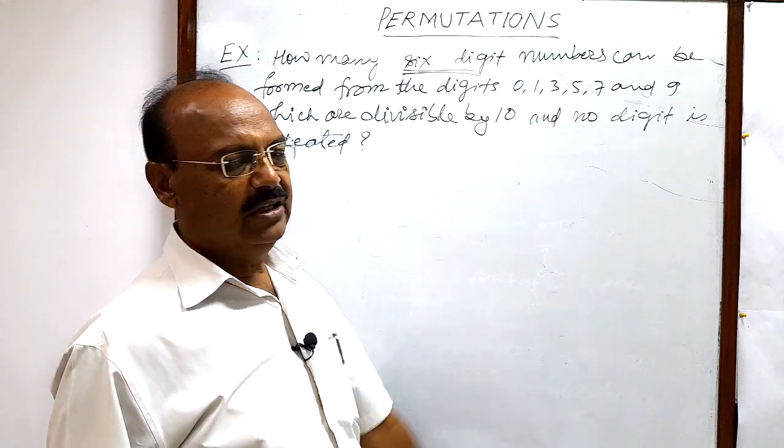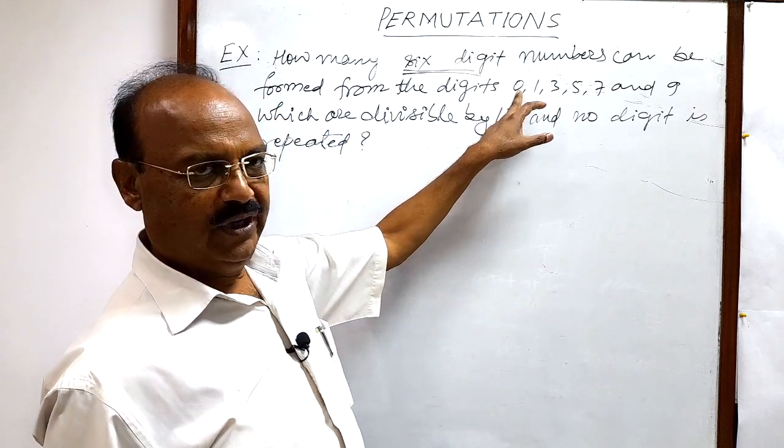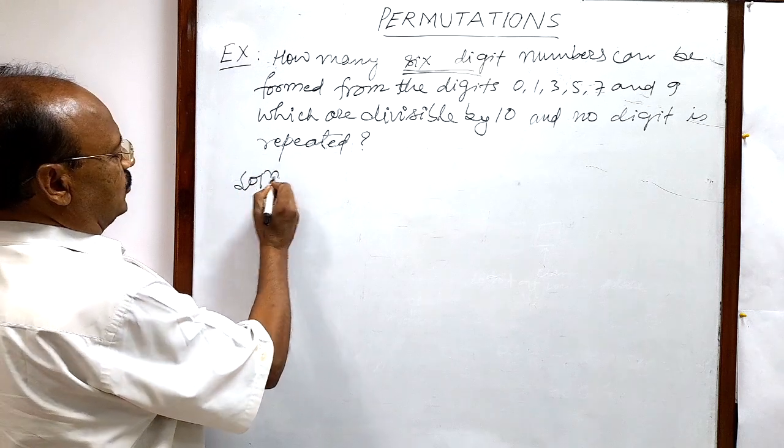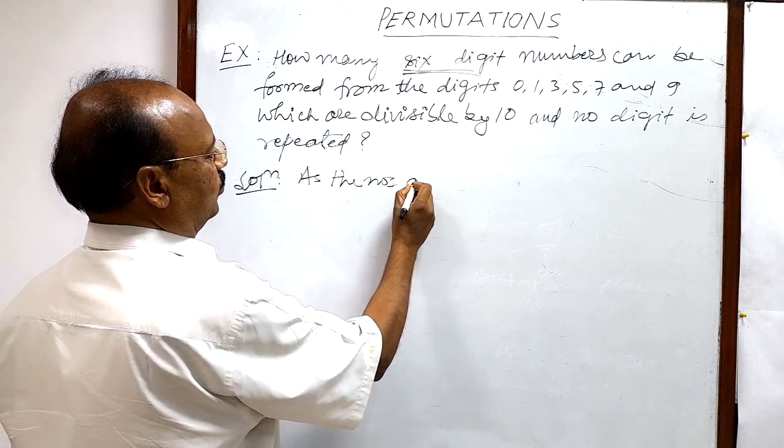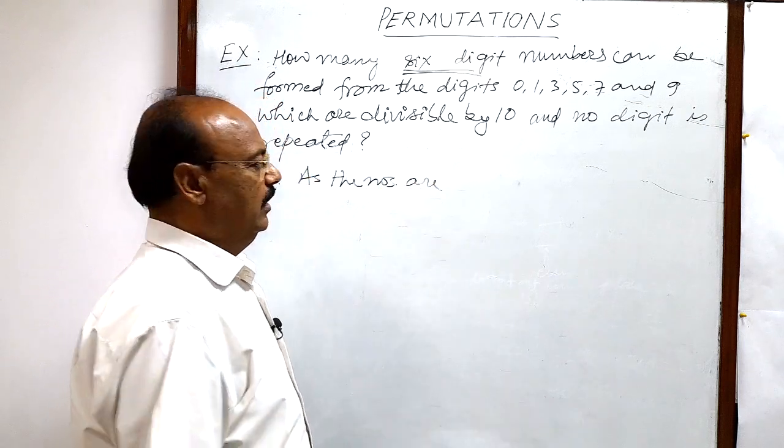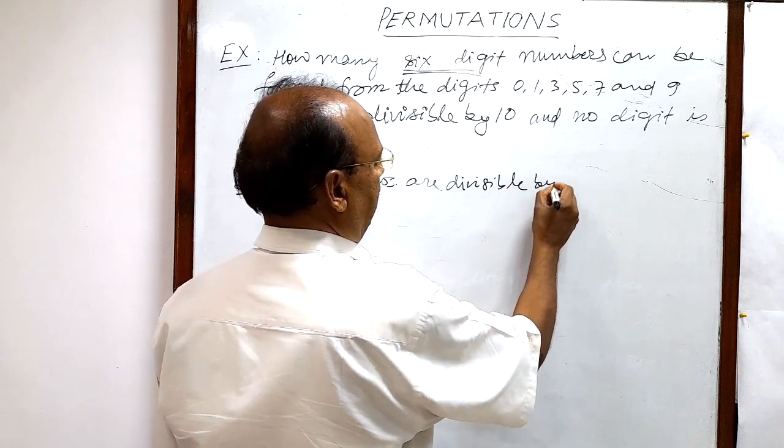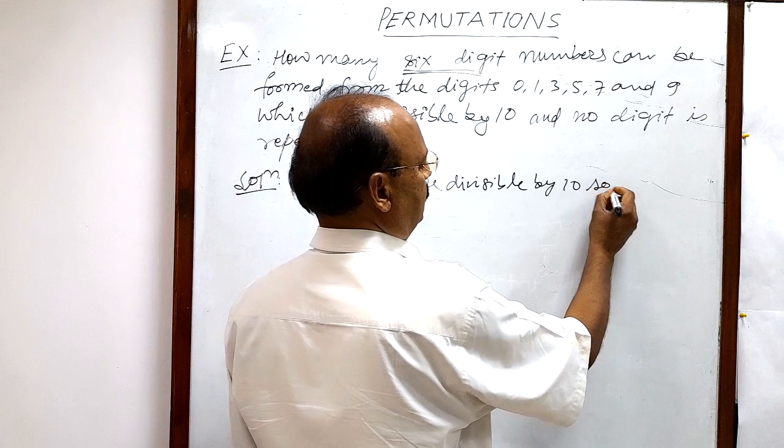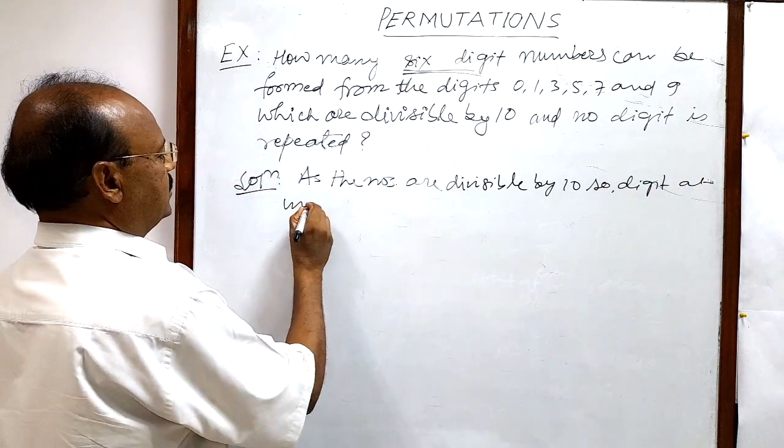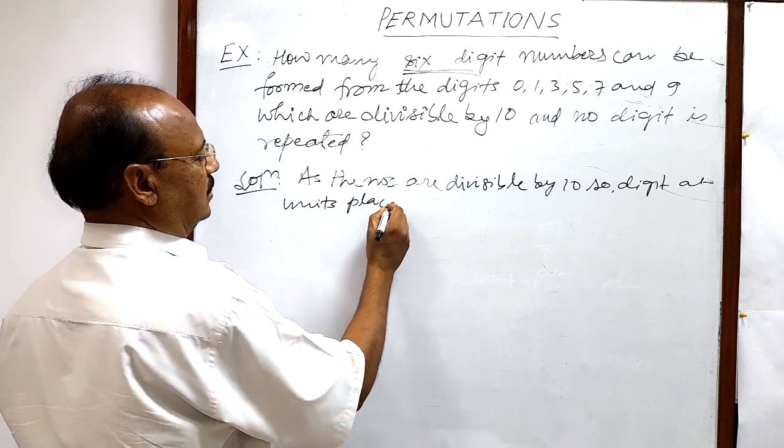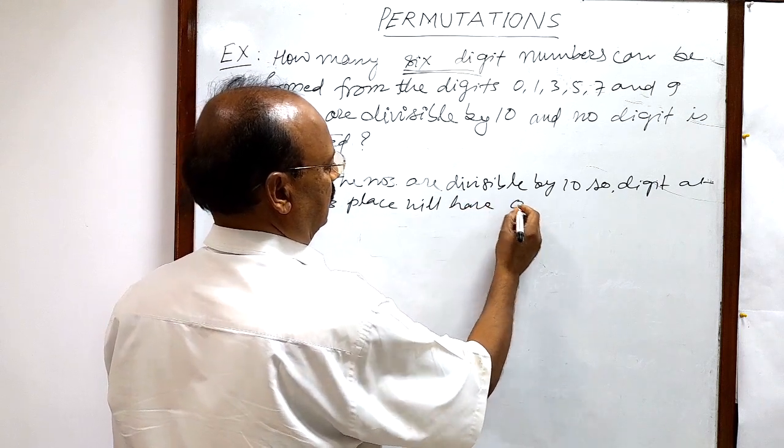If numbers are divisible by 10, then the digit at units place should be 0. So see the solution: as the numbers are divisible by 10, the digit at units place will have 0.